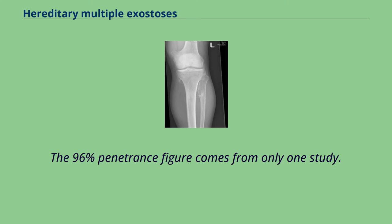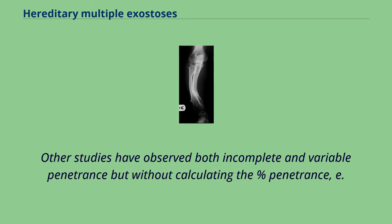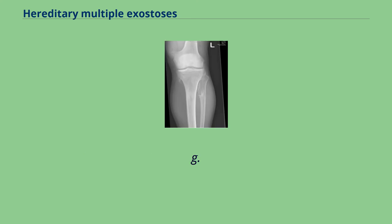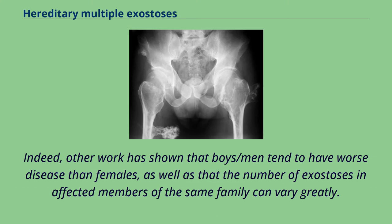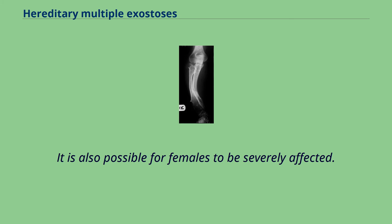The 96% penetrance figure comes from only one study. Other studies have observed both incomplete and variable penetrance without calculating the percent penetrance. In both aforementioned studies, the symptomless individuals carrying the faulty gene were predominantly female, leading to speculation that incomplete penetrance is more likely to be exhibited in females. Indeed, other work has shown that boys and men tend to have worse disease than females, and the number of exostoses in affected members of the same family can vary greatly. It is also possible for females to be severely affected.